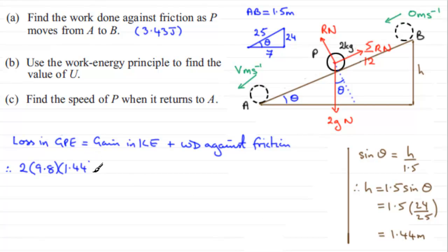So there's our loss in gravitational potential energy. It's equal to the gain in kinetic energy. So it had no kinetic energy up here. So the only kinetic energy it's gained is the kinetic energy down here, which is going to be a half MV squared. Half the mass is 2, and V squared. And plus the work done against friction, which we've seen in the first part was 3.43 joules.